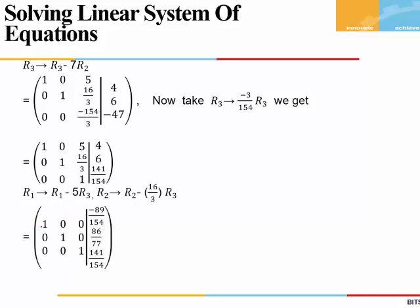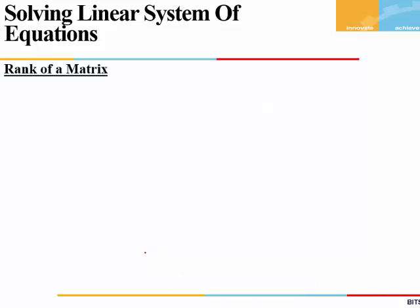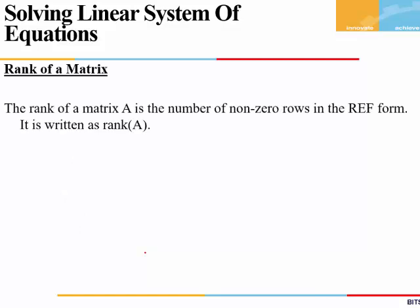We can see that here we get the direct solution: x = −89/154, y = 86/77, and z = 141/54. Now let's define the rank of a matrix. When we reduce our matrix A to REF form using Gauss elimination, or reduce it to RREF form using Gauss-Jordan, the number of non-zero rows in the final matrix gives us the rank of matrix A. We write it as rank(A), and this helps us determine whether a given system will have a trivial solution, a unique solution, no solution, or infinite solutions.